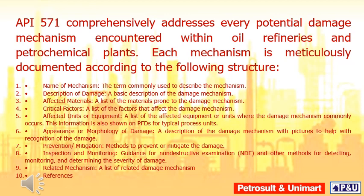API 571 comprehensively addresses every potential damage mechanism encountered within oil refineries and petrochemical plants. Each mechanism is meticulously documented according to the following structure: name of mechanism, description of damage, affected materials, critical factors, and affected units or equipment. The appearance or morphology of damage section provides a description with pictures to help with recognition of the damage.